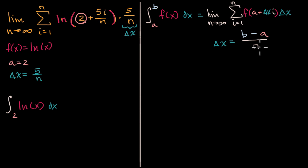Over n. And so you can pattern match here. If this is delta x is equal to b minus a over n, let me write this down. So this is going to be equal to b, b minus our a, which is two, all of that over n. So b minus two is equal to five, which would make b equal to seven. b is equal to seven.